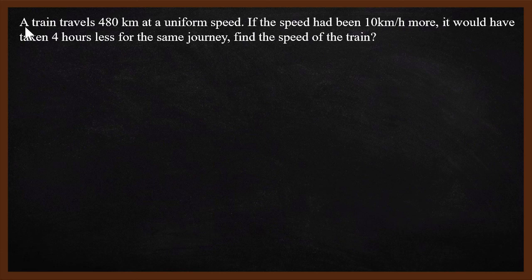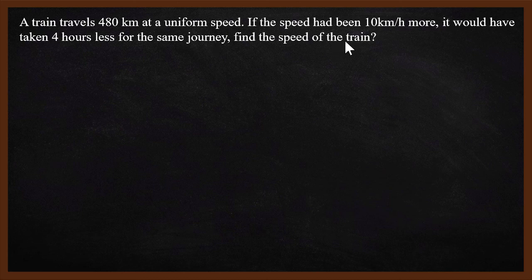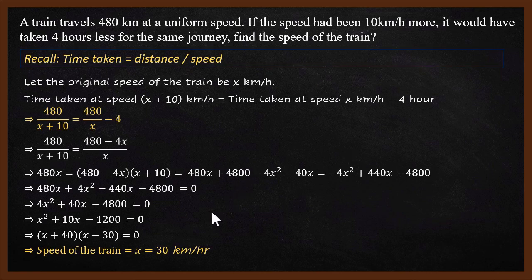Welcome to this video. A train travels 480 km at a uniform speed. If the speed had been 10 km per hour more, it would have taken 4 hours less for the same journey. Find the speed of the train. The answer is 30 km per hour. How did we get this 30 km per hour? That's why I will watch this video.